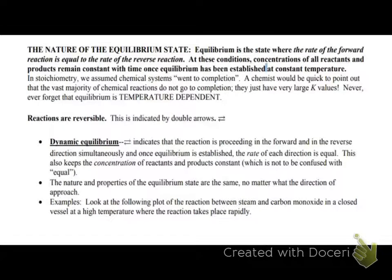So the nature of equilibrium state. Equilibrium, of course, is the state where the forward and the reverse reaction is equal. So at the conditions, the concentrations of the products and the reactants are going to remain constant when equilibrium is established. And, of course, that's at constant temperature. When we were doing stoichiometry problems, we always assumed that the reaction went 100% to completion, but in actuality, that's not the case. There's a large portion of the reactions that don't go to completion, but they reach an equilibrium state where it appears that nothing's going on.